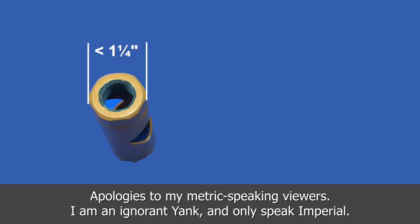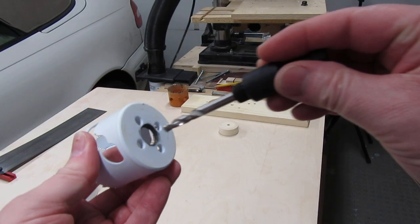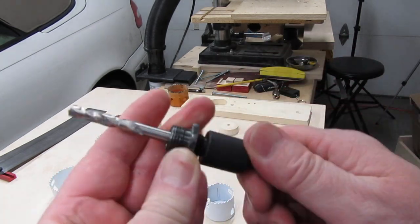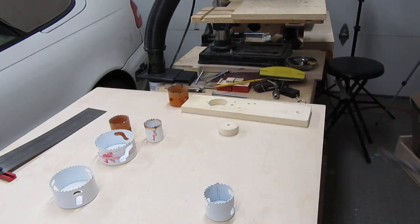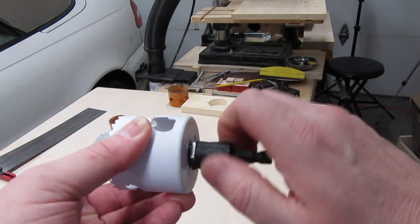Hole saws smaller than one and a quarter inches in diameter have a smaller threaded hole than saws with diameters of one and a quarter inches or larger. This particular mandrel is sized for the smaller saws, so it has an adapter that screws onto the collar for the larger size saws. I actually use a different mandrel than this, but I'll explain that later on in the video.